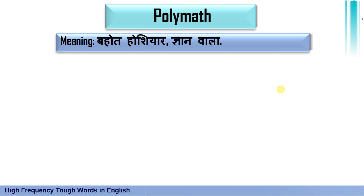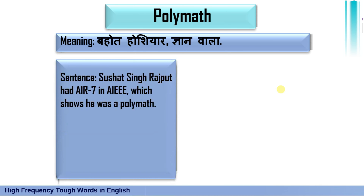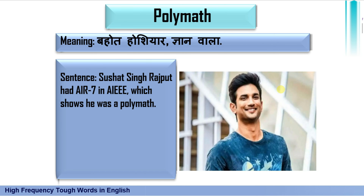Then 'polymath,' which means bahut hoshiyaar ya gyan wala — very talented, very sharp-minded. I took a very good example: Sushant Singh Rajput had All India Rank 7 in AIEEE, which shows he was polymath. He was not only a good actor but also a very talented, genius person — bahut hoshiyaar.